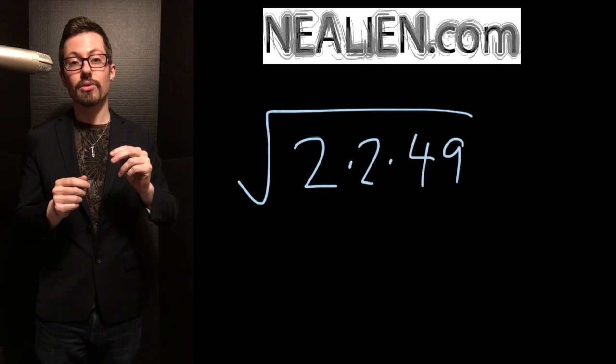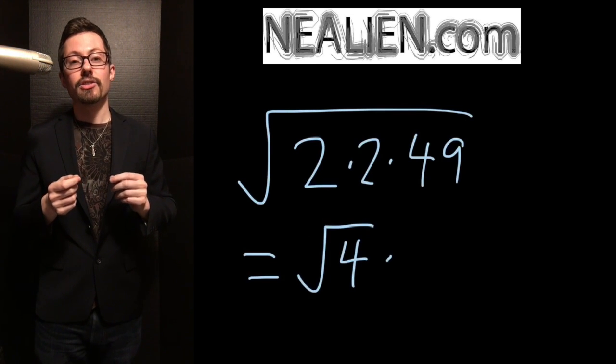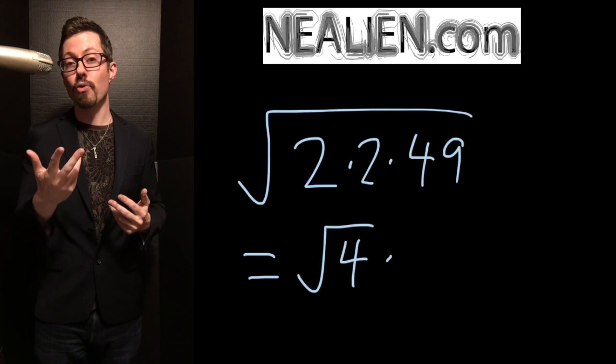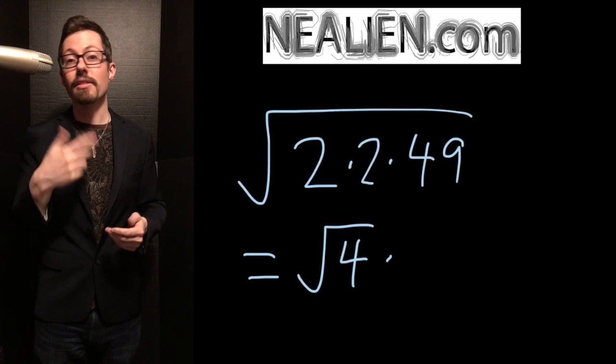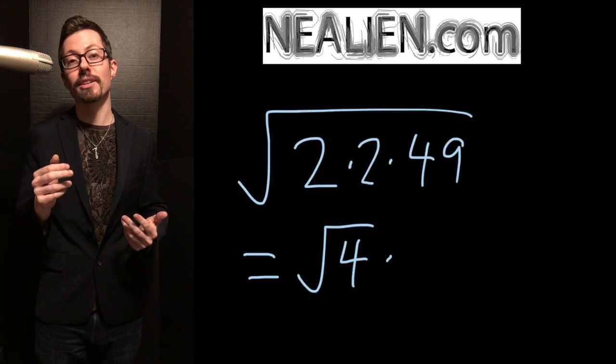2 times 2 is a perfect square. 49 is a perfect square. 2 times 2, when you multiply it by itself gives you 4, which is 2 times 2. And 49, you probably recognize as being a perfect square. The square root of 49 is 7.